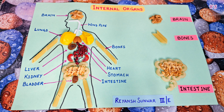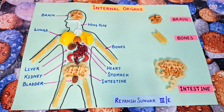Internal organs are those organs which are inside of our body and cannot be seen, called internal organs — like brain, lungs, heart, liver, stomach, kidneys.